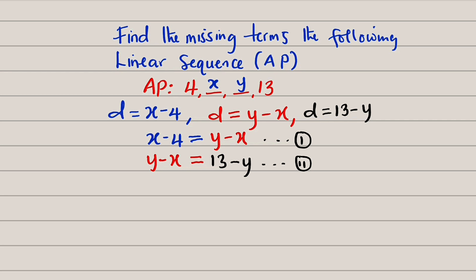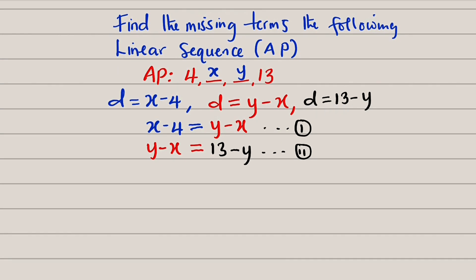From the first equation, we can make y the subject. Let us do that. We have x minus 4 equals y minus x. Therefore, y can be equal to 2x minus 4. Remember, if you take this negative x backward, it becomes positive. And we have another x there. x plus x is equal to 2x minus 4 equal to y. Therefore, y is equal to 2x minus 4. This is equation number 3.